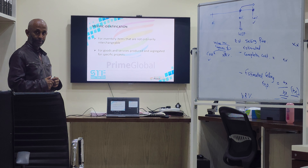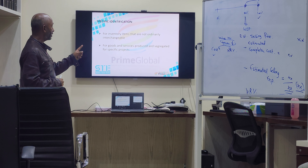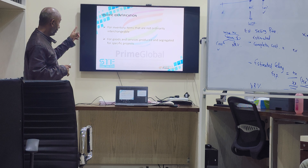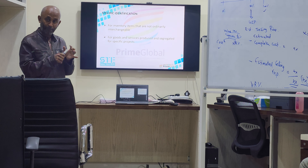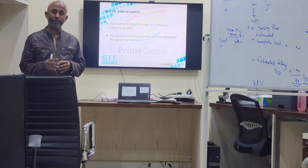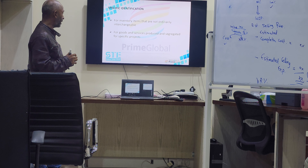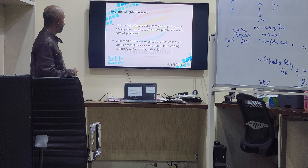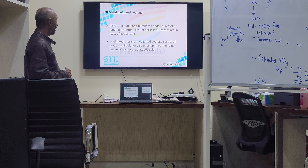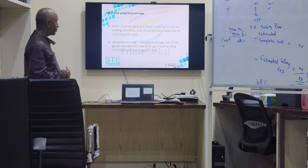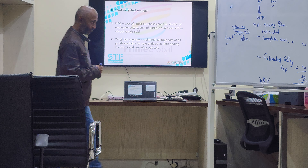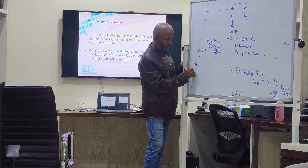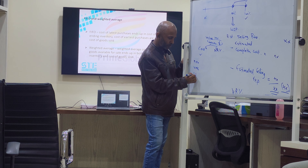Inventory items that are not ordinarily interchangeable — for goods and services produced and segregated for specific projects, you use specific identification. Cost of latest purchases ends up in cost of ending inventory; cost of earliest purchases are in cost of goods sold. Now, if you have FIFO and weighted average — and for the sake of understanding, we also talk about LIFO — and you have cost of sales, closing stock, and gross profit.